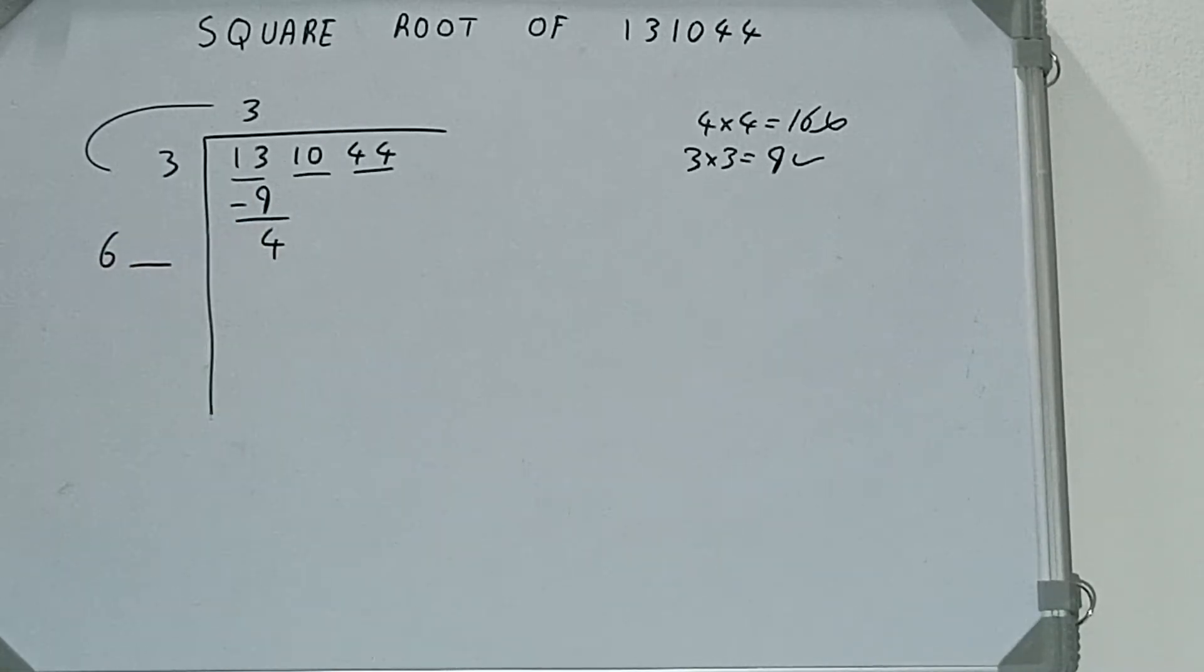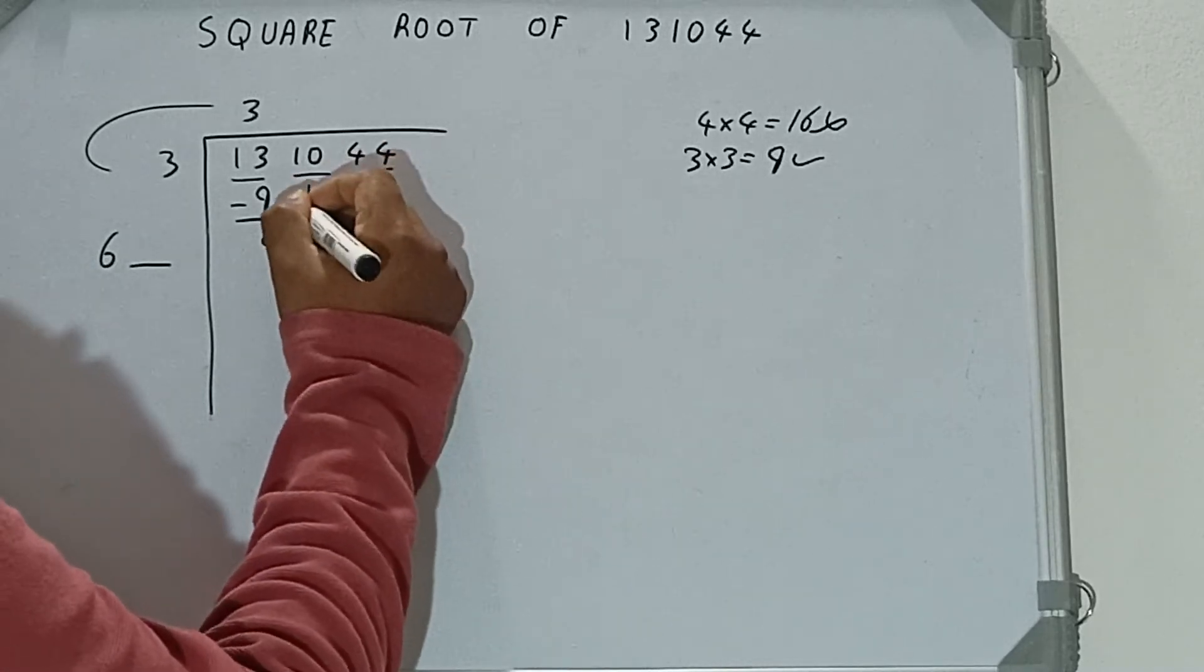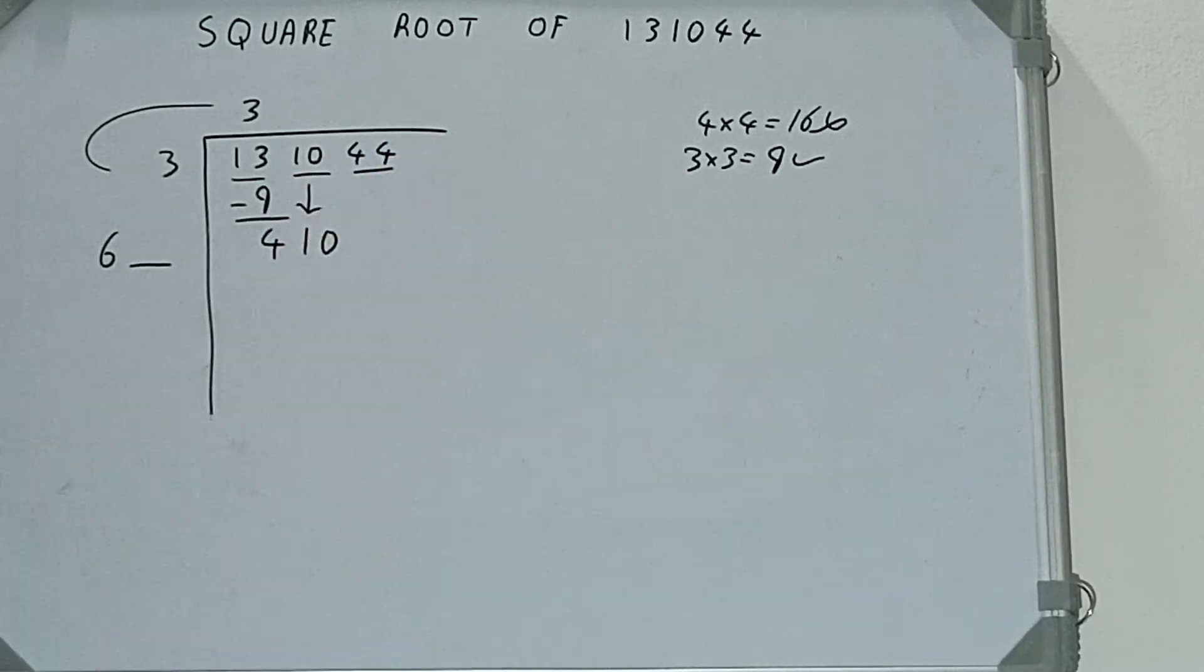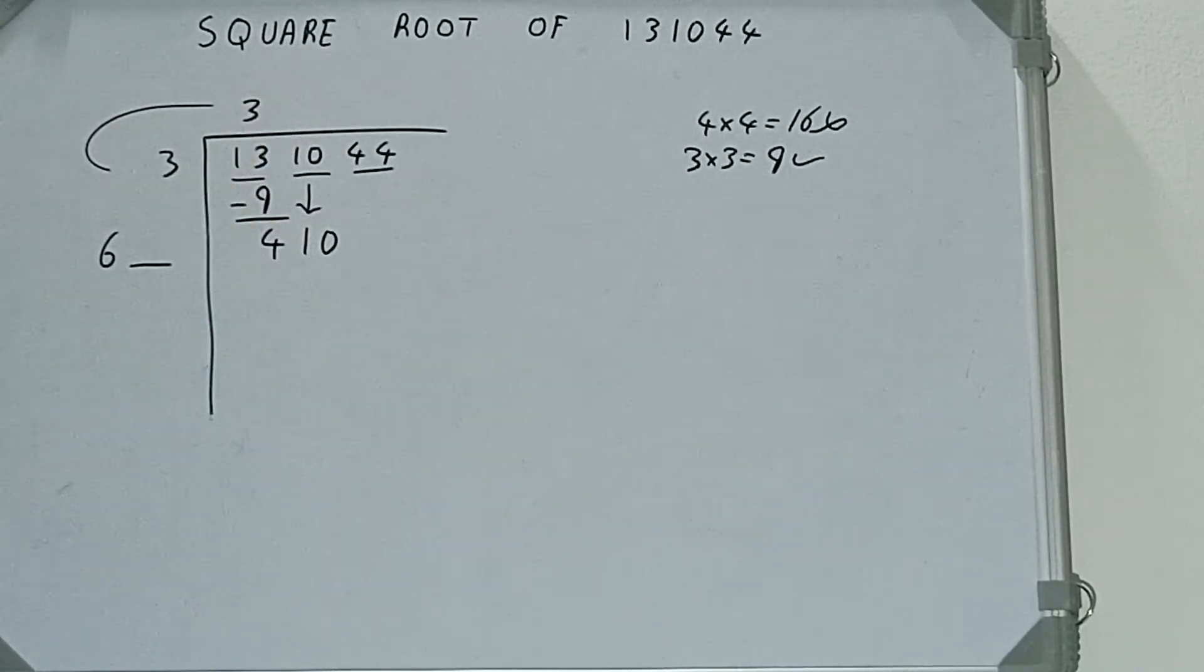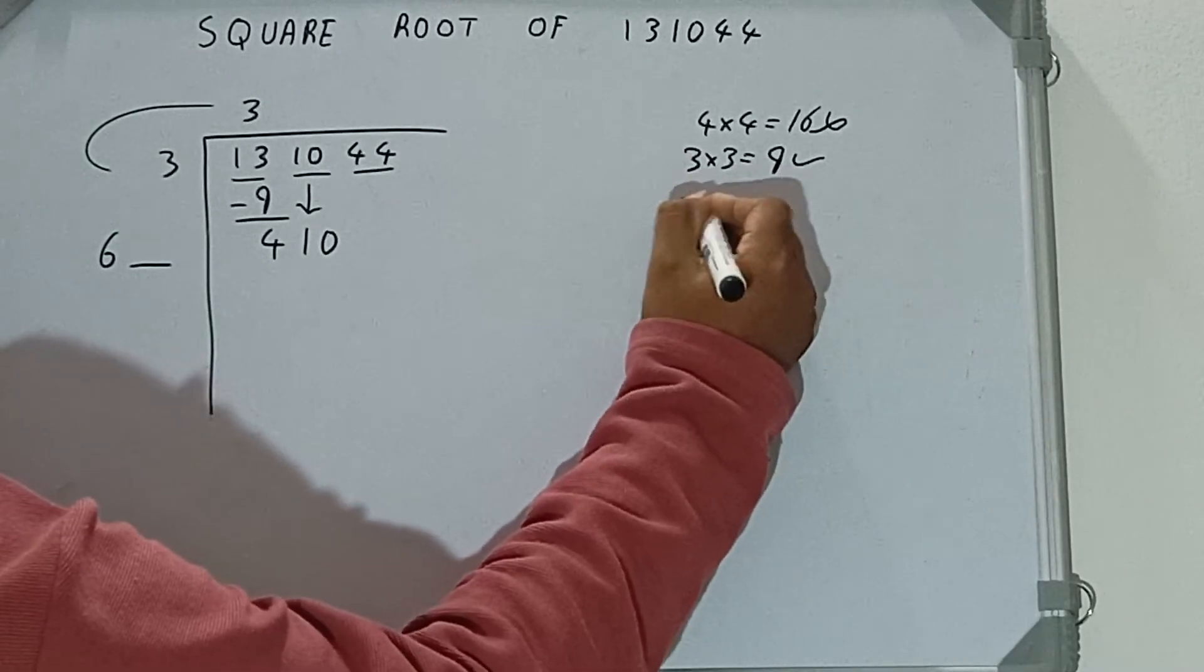And this number we need to make it big, so bring the next pair down and it will be 410. Now whatever number we write here, we need to write here also.